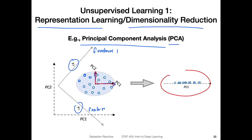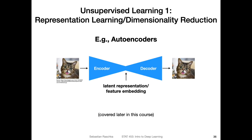If you don't know how PCA works, no worries — it's just a nice example of unsupervised learning if you're already familiar with it. Another example of unsupervised learning is autoencoders, and this is something we will be talking about in part five of this course.